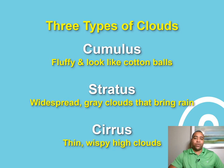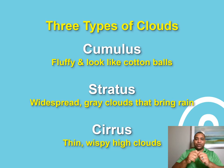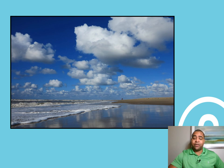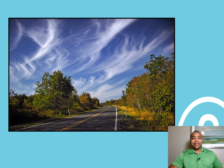And then we have cirrus clouds. They are those thin, wispy-looking clouds that are really high up in the sky — they almost look like string cheese from mozzarella sticks. These are an example of cumulus clouds, and usually with thunderstorms, we see them associated with some form of cumulus clouds. This is an example of cirrus clouds.